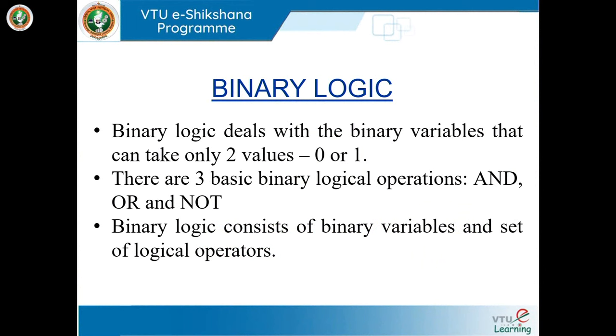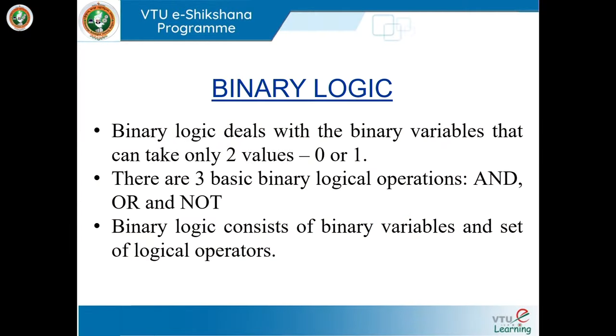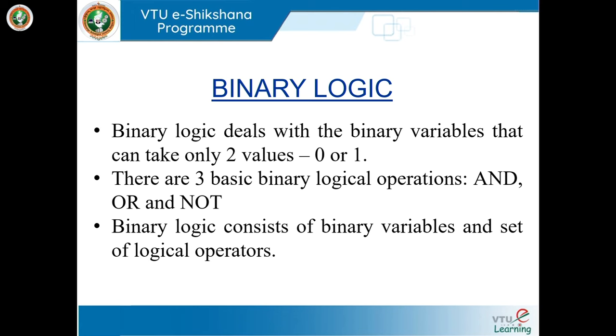Sometimes 0 and 1 are also referred to as true and false, or high and low. In binary logic, we have three operations that can be performed on binary variables: AND, OR, and NOT. Binary logic consists of binary variables and a set of logical operators, and a binary expression contains binary variables and binary operators.